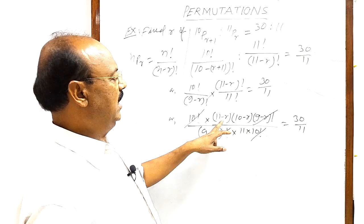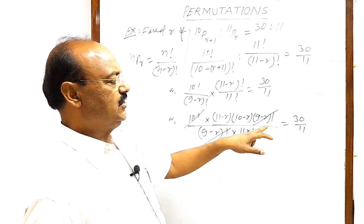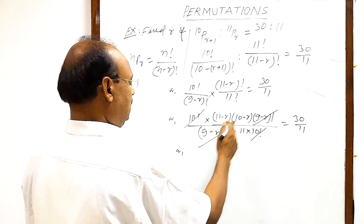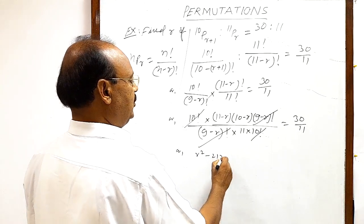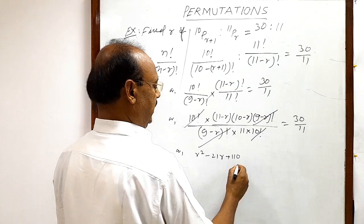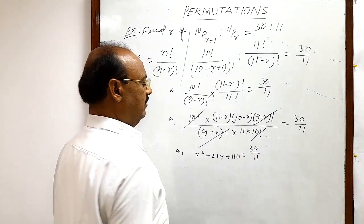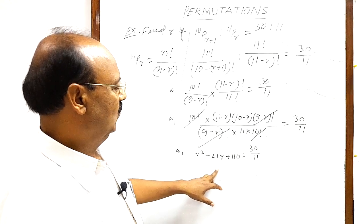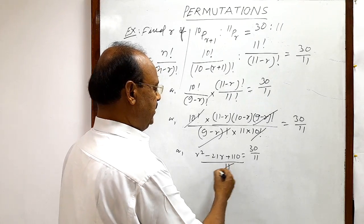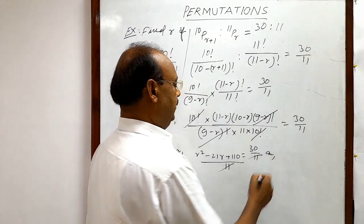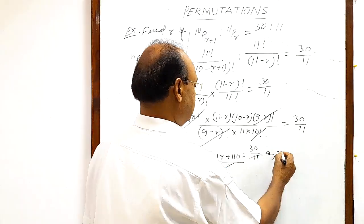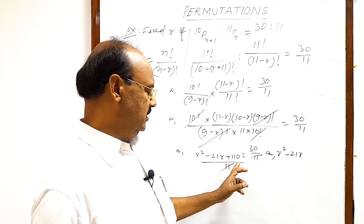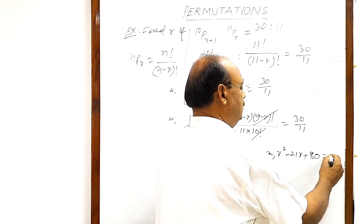Now let us simplify. We have to multiply (11 minus R) and (10 minus R), and by cross multiplication we can simplify further. So (11 minus R) into (10 minus R) equals R squared minus 21R plus 110, equal to 30 by 11. The denominator 11 will be cancelled out, and transposing 30 to the left-hand side we get R squared minus 21R plus 80 equals 0.